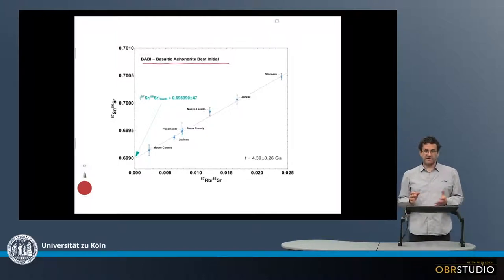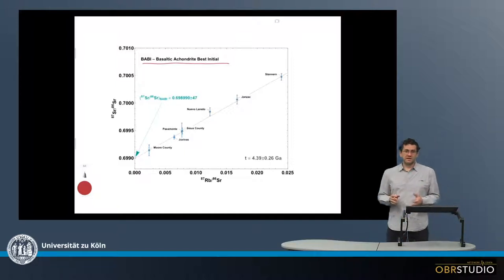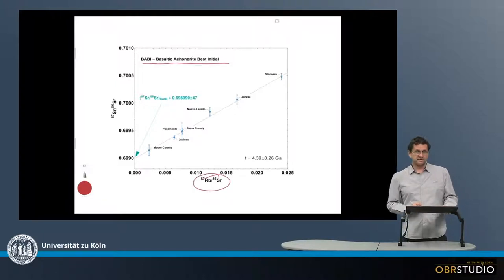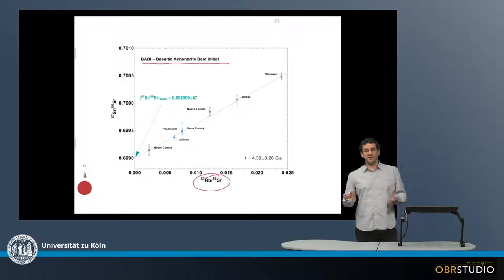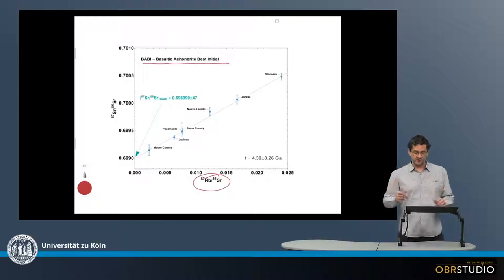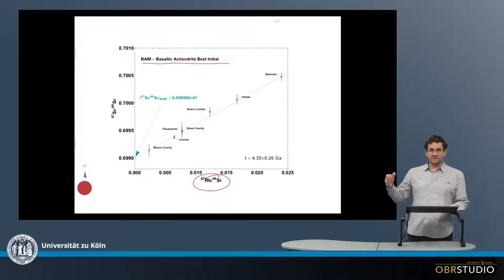So for this, a number of achondrites are used. And the reason for using various achondrites is that they have various rubidium-87-strontium-86 ratios, and that is what is required. We cannot use just a CI chondrite, because then we get just a single value. And with a single value, we cannot determine an initial. We need a couple of various values for rubidium-strontium ratios to determine this isochron, and from this then the initial value.